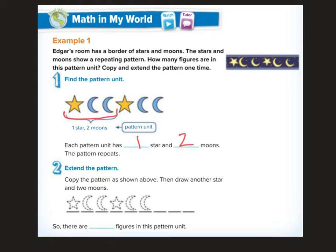And if I were to extend it one time, I would do star, moon, moon. Now, does it look as pretty as theirs? No, but we get it, right? Oh shoot, I was supposed to do it down here. Star, moon, moon. Star, moon, moon. Star, moon, moon. There are blank figures in this pattern unit. There are still three. Here's the pattern unit, you guys. Here's the pattern unit. There are still three. How many figures are in this pattern unit? There are still three.